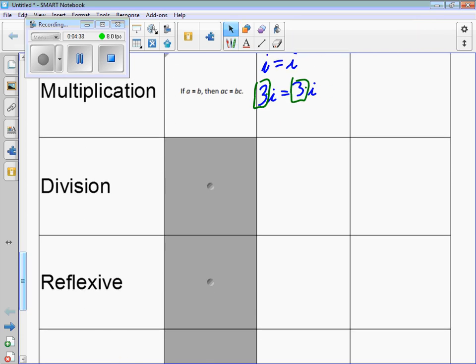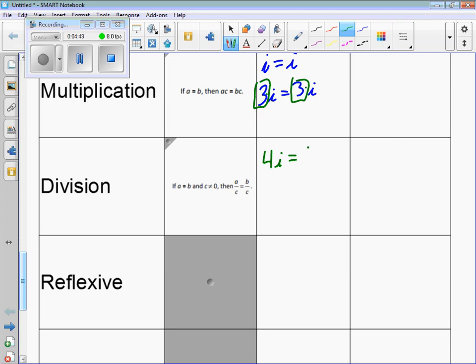Division works the same way. So we have, if a equals b, let's pick 4i equals 4i. Then 4i divided by 2, you're dividing on both sides. So it works the same way with division.